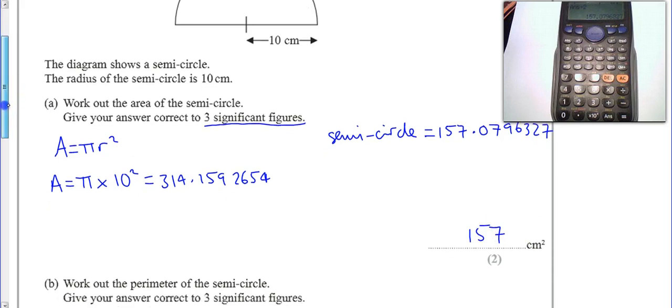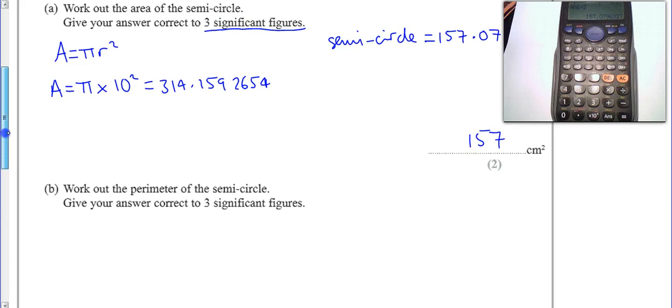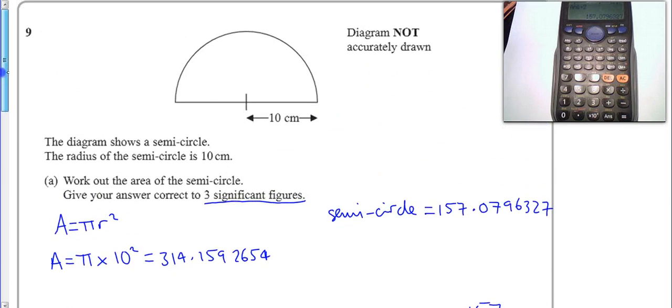Second one asks us to work out the perimeter of the semicircle. So this time we've got to work out, and this is important, we're going to work out this curve length around there, but we can't forget to add on 10, 20, because we've got to find the perimeter with the diameter across here.